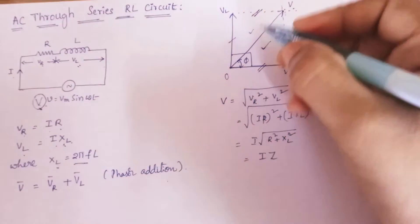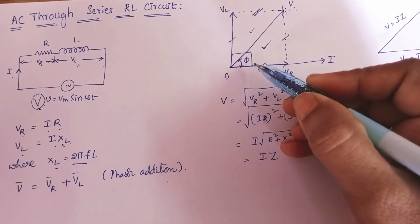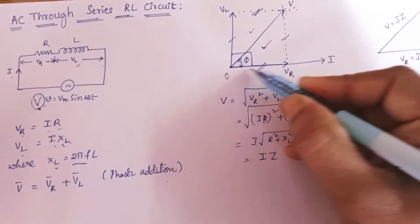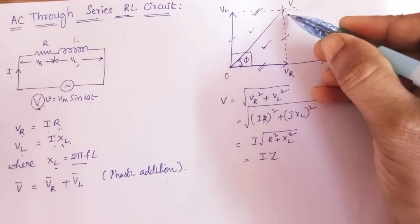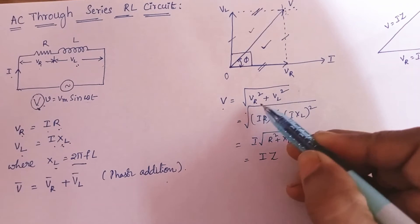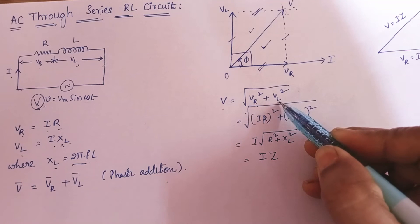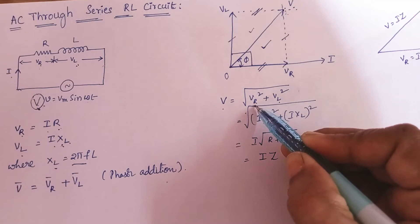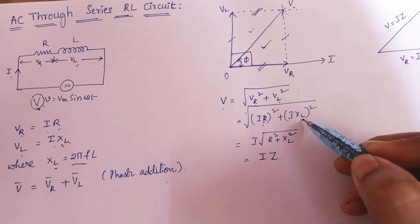From this voltage triangle, what we can write? By applying Pythagoras theorem, this V square equal to Vr square plus Vl square. And then we may get V as root of Vr square plus Vl square. And we already know that Vr is IR, Vl is IXL. We can substitute like that.